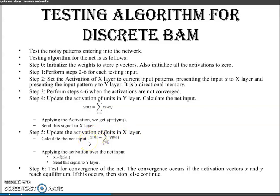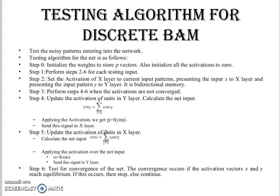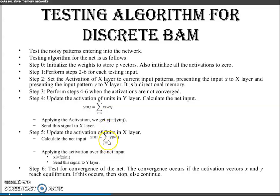Calculate the net input of x_ini as sigma j equal to 1 to m of y_j times w_ij. Then calculate the activation: x_i equals f of x_ini. The activation function is applied over the net input. Then the signal is sent to the X layer.